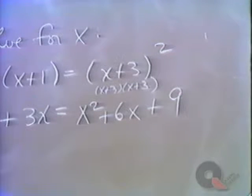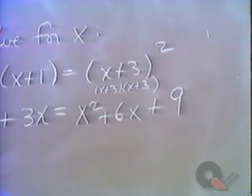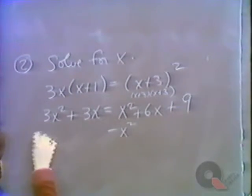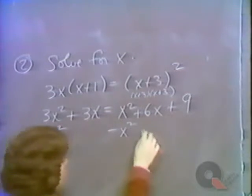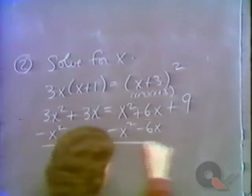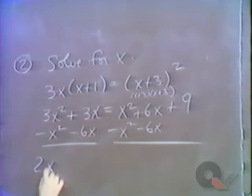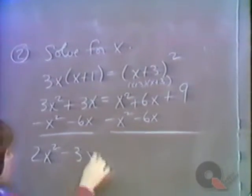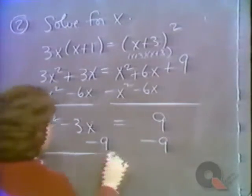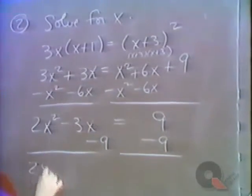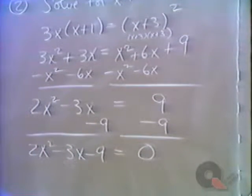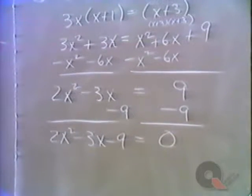Now we get everything on the left side equal to zero. We subtract x squared from both sides and subtract 6x from both sides. This gives us 2x squared minus 3x equals 9. Then subtracting 9 from both sides: 2x squared minus 3x minus 9 equals zero. Here we have our quadratic equation in standard form, ready to factor.